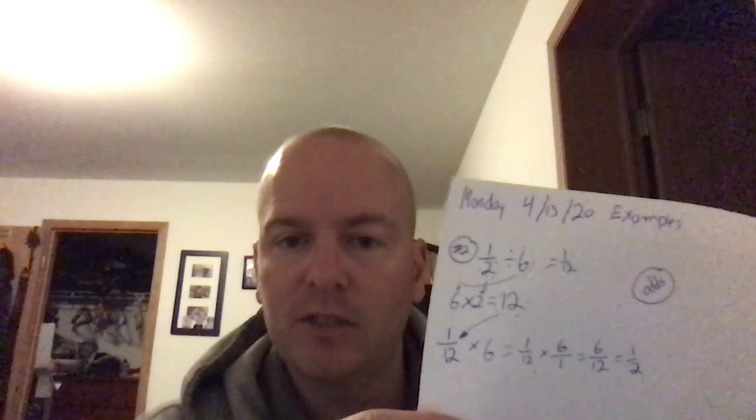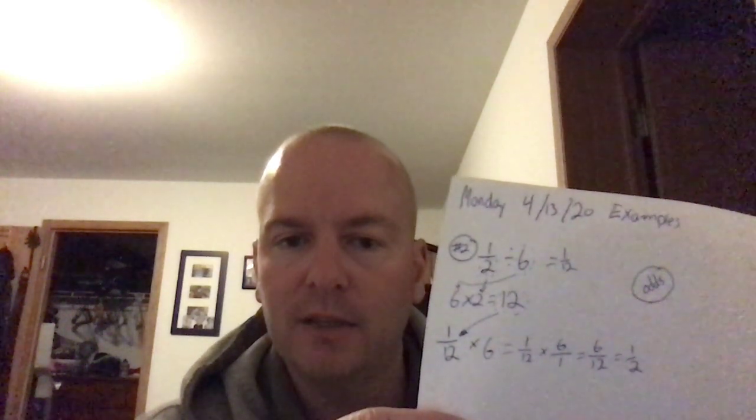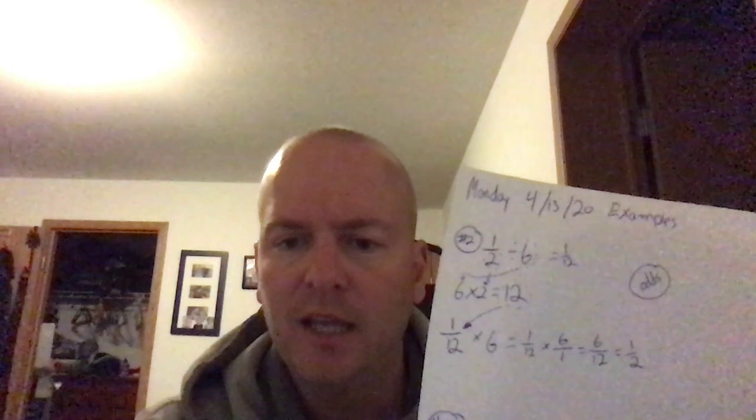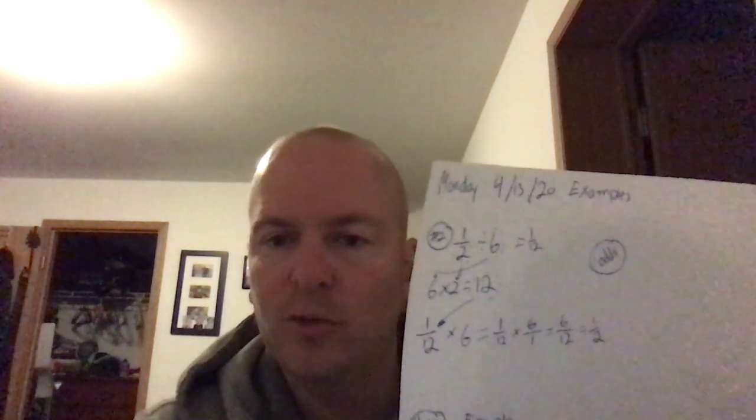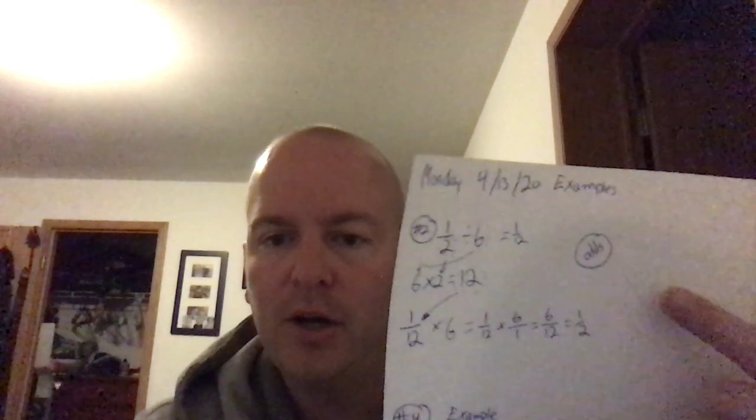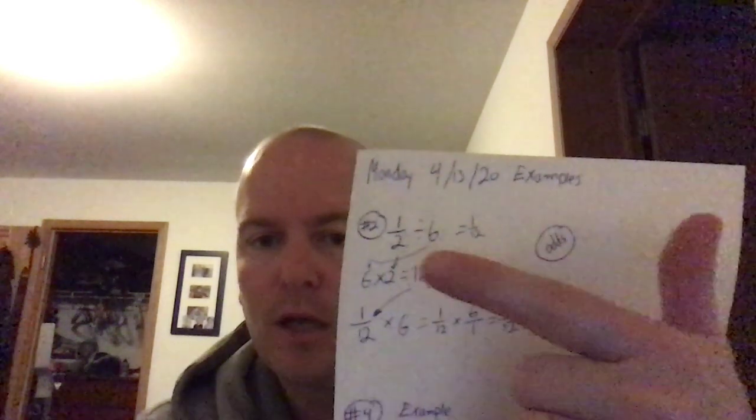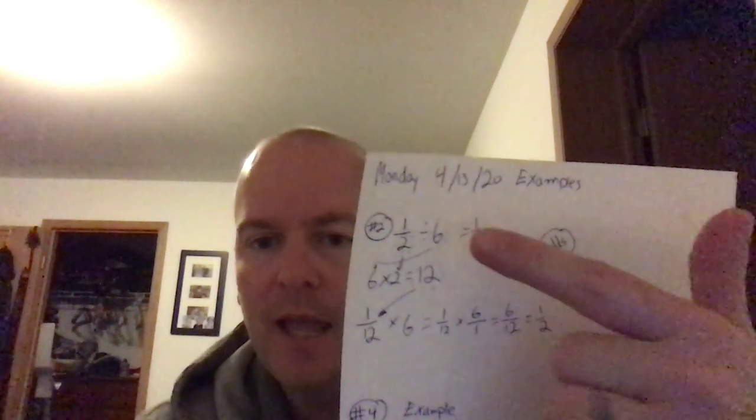Put a one as a denominator, then multiply straight across. You end up with six-twelfths, and then you need to simplify it. It equals one-half, and there is your half, so you're good. Your answer is one-twelfth.